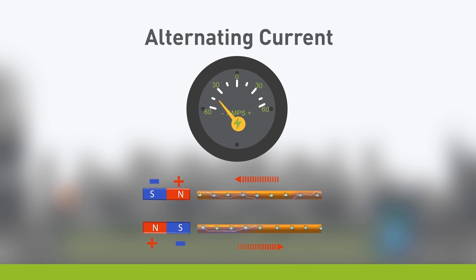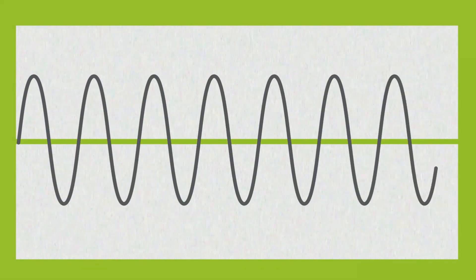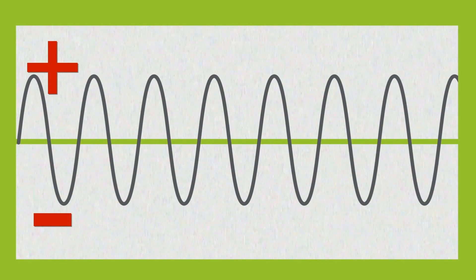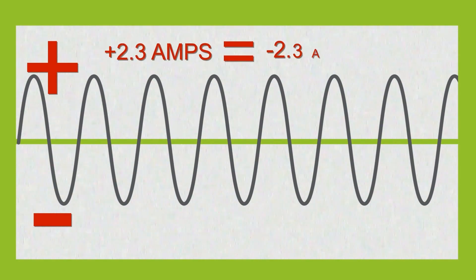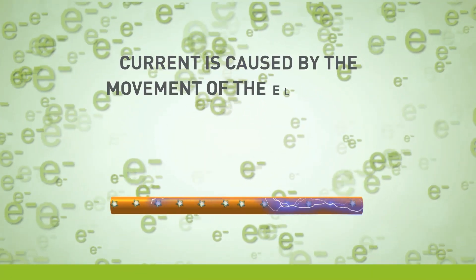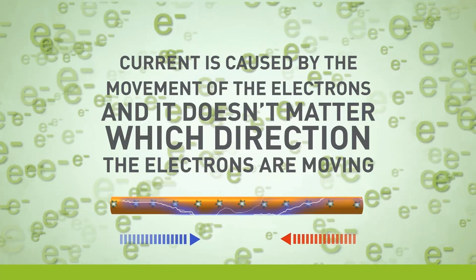An ammeter measures the amps or current in a line. Some will show positive and negative values and others won't. Another method of measuring current is to use a digital oscilloscope. Many charts will show positive and negative numbers to reflect the direction of the current. Remember, plus 2.3 amps provides the same current strength as minus 2.3 amps. Let me repeat this critical statement. Current is caused by the movement of the electrons and it doesn't matter which direction the electrons are moving.